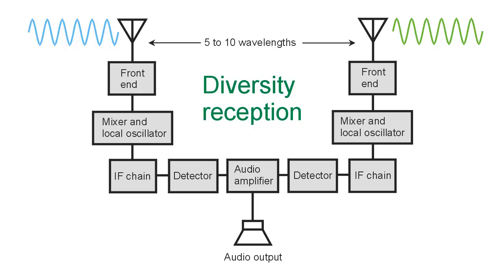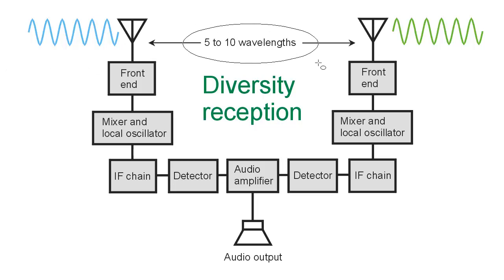This particular topic is known as diversity reception, and I'd like to explain just a little bit about how that works. In this example I have lifted figure 25-16 from the 5th edition and embellished it a little to illustrate the principle. This is known as dual diversity reception — D-U-A-L — two signals coming into different antennas spaced approximately 5 to 10 wavelengths apart.